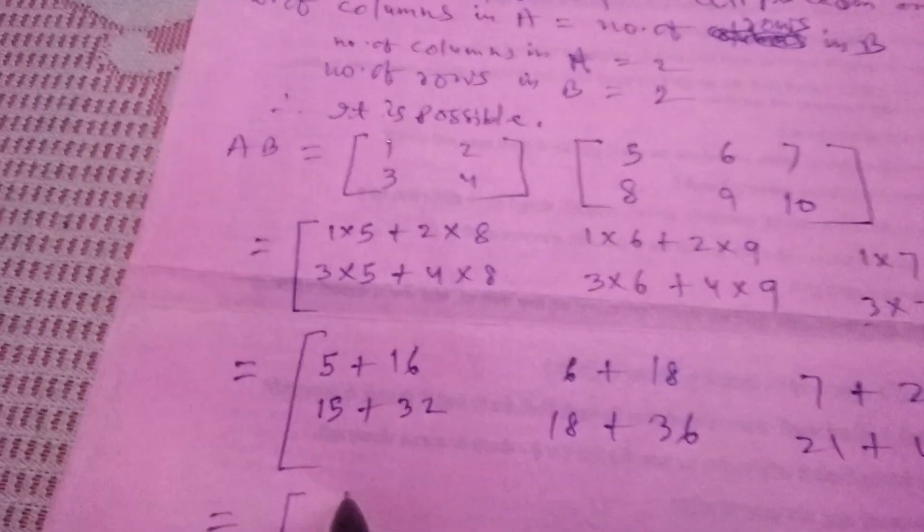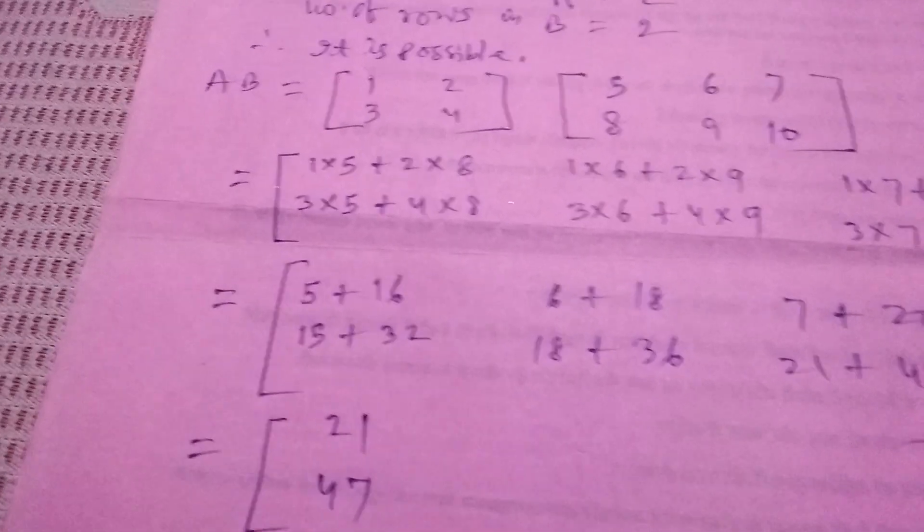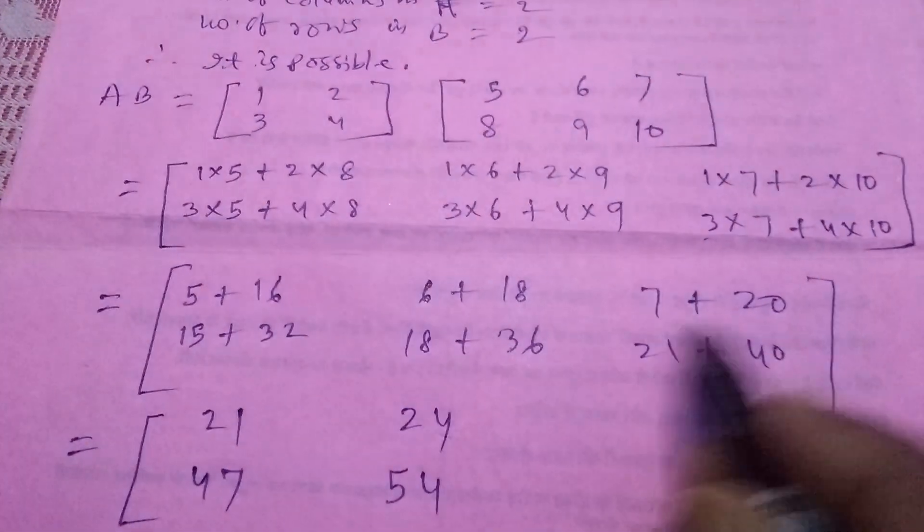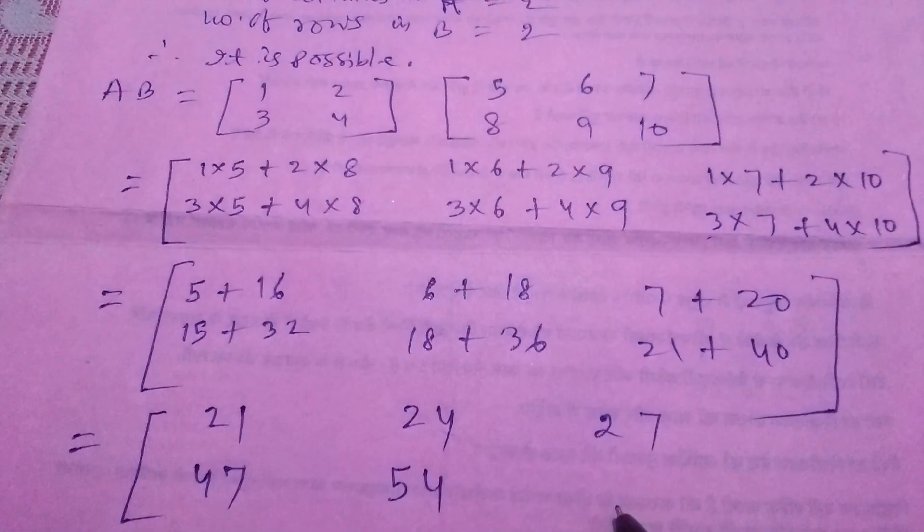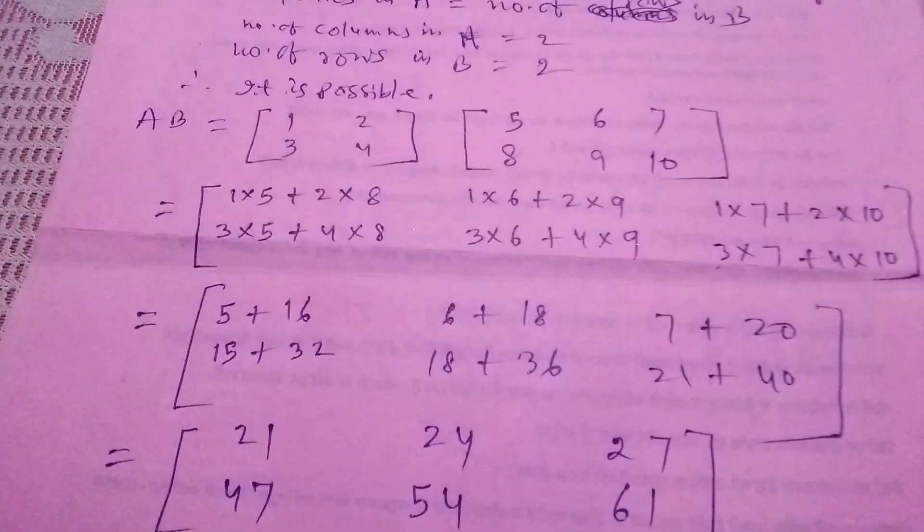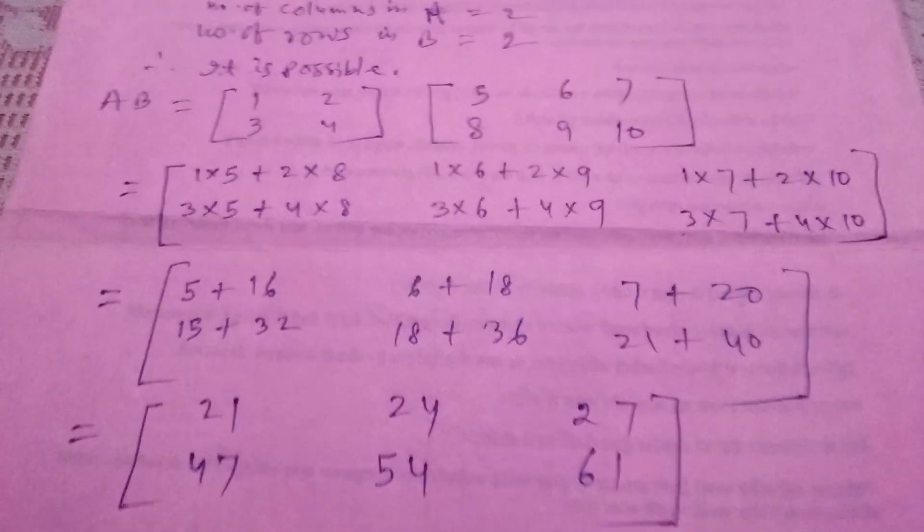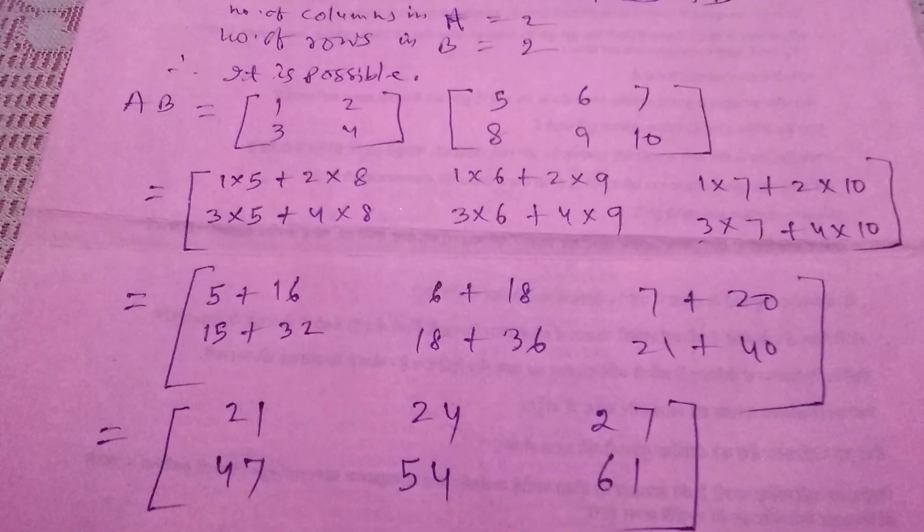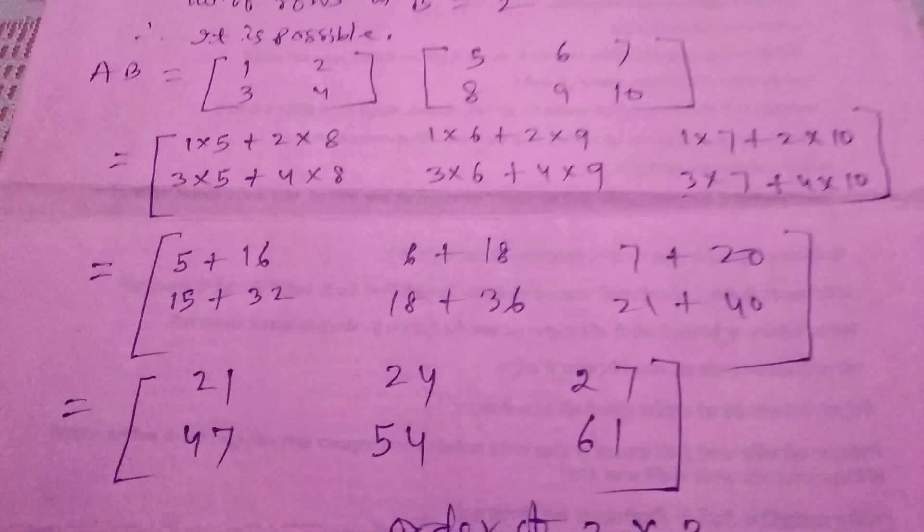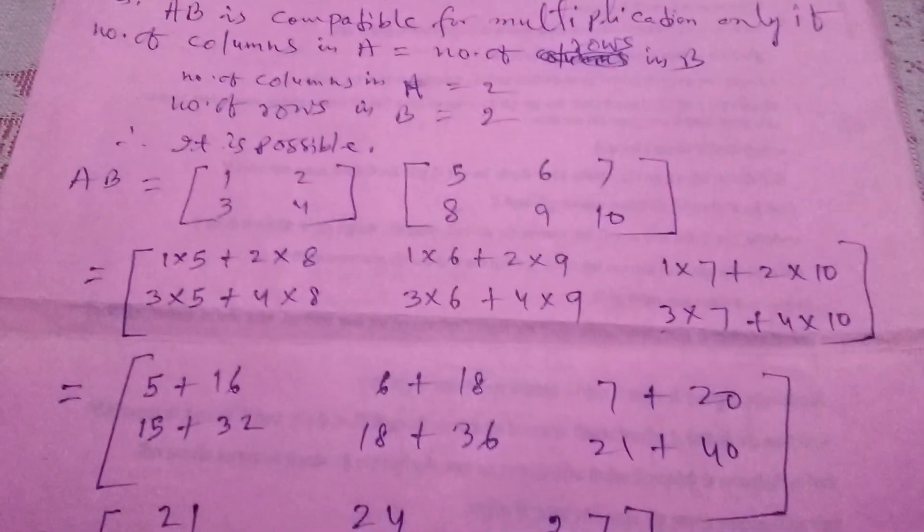So this we have got here: 21, 47, 24, 54, 27, and 61. So order of AB matrix is 2 by 3. Okay, this is our answer.